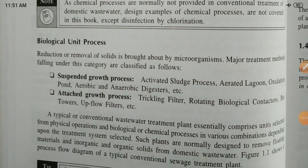In biological unit processes, the reduction or removal of solids is brought about by microorganisms. Major treatment methods under this category include suspended growth, activated sludge processes, and aerated oxidation ponds. For industrial wastewater treatment, the study of wastewater generation, characteristics, and flow sheets are important. Process flow sheets for industries such as sugar, textile, steel, paper and pulp, refinery, pharmaceutical, and dyes and intermediates are covered.